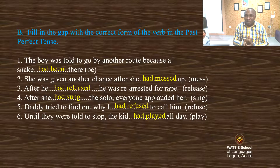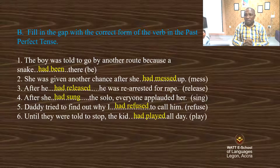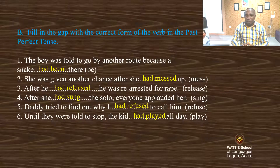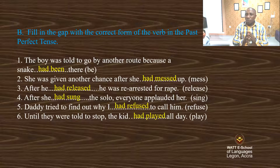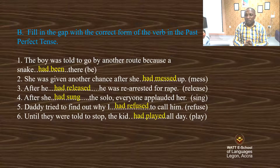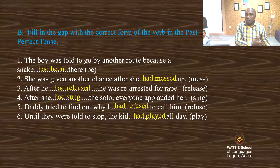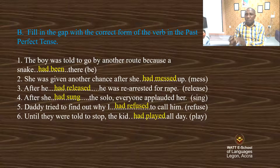This is the end of the past perfect. You can notice that we only have to add 'had' plus the past participle of the verb. You should know the past participle of each verb to be able to do this. If you don't know the past participle, you will find it difficult to form the past perfect. So the past perfect means 'had' plus the past participle of the main verb.